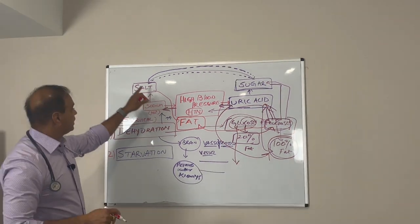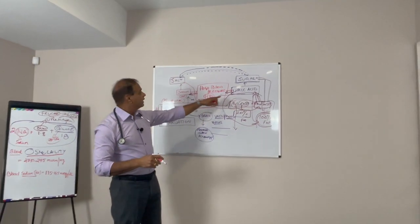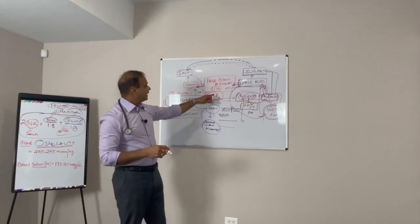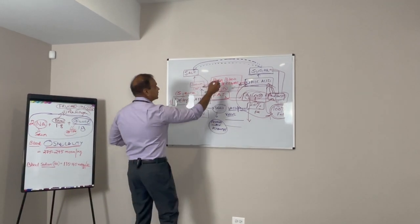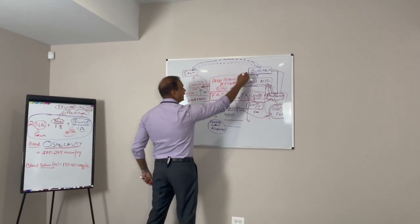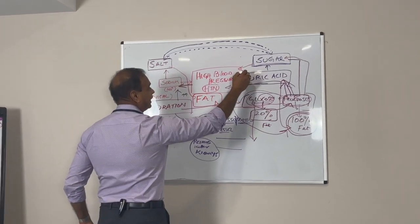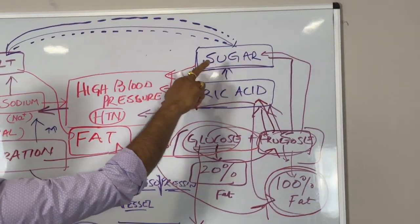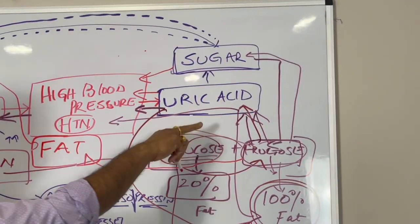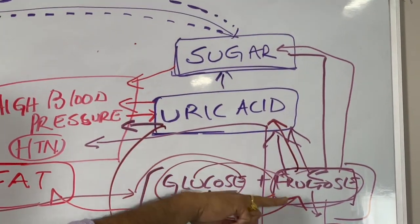So there is a connection between salt, sugar, fat, and high blood pressure. These are the connections that we are trying to make — and that sugar is actually from uric acid, which is fructose again.